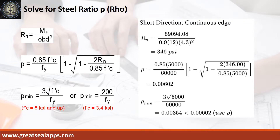Given short direction, continuous edge moment equals 69,094.08 inch-pounds. Resistance factor equals 0.9, b equals 12 inches, and d equals 4.3 inches. The beam design ratio RN equals 346 PSI, and reinforcement ratio rho equals 0.00602.